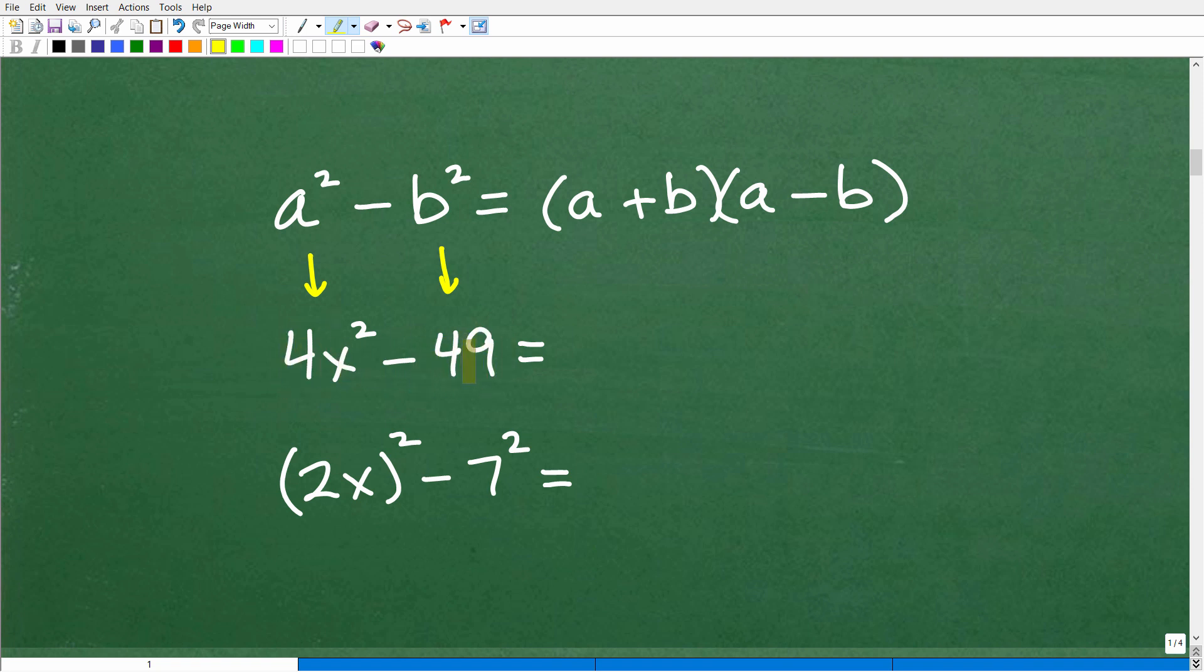Okay, so the first thing when you're thinking about factoring here is you always want to see if you can factor out a greatest common factor. Well, 49 is 7 times 7, and this is 4. So we can't factor anything out. So if you can factor something out, let me give you an example. Let's say you had 4x squared minus 16.